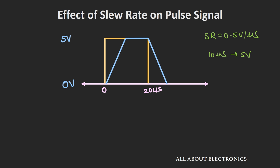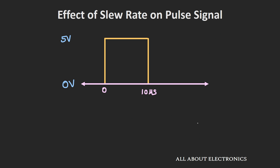The distortion of the output signal depends on the input signal frequency as well as the amplitude of the output voltage. For example, if the time period is reduced to 20 microseconds with an on-time of 10 microseconds, the op-amp still takes 10 microseconds to reach 5V and then 10 microseconds to return to 0V, so the output waveform will look like a triangular wave.